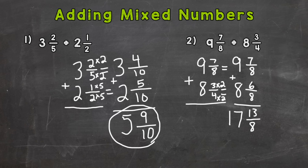Our fractional part is an improper fraction, so we don't want to leave it like that — it's more than one whole. We're going to change it to a mixed number and combine the whole numbers together, so that's seventeen plus whatever whole number we get out of that improper fraction.